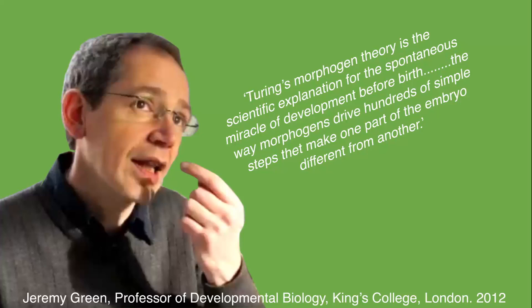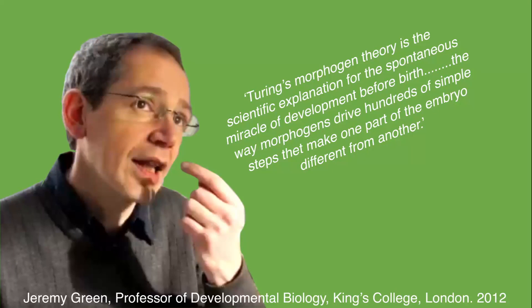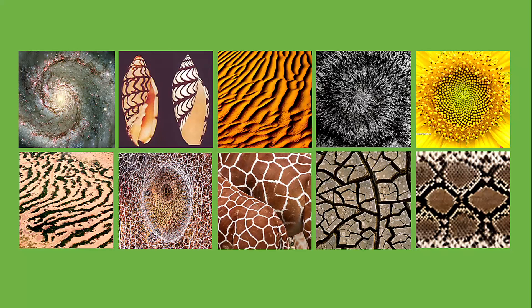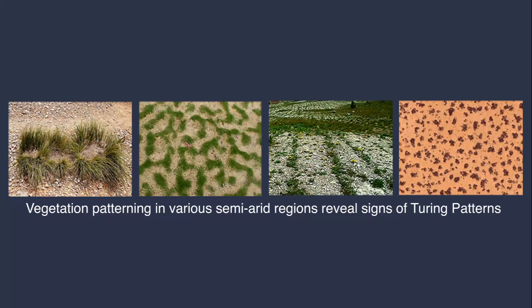It's only through hard-nosed scientific proof that scepticism towards Turing's theory can be dispelled, and such proof is now emerging. Ongoing research reveals that soon it will become possible to use morphogens to repair complex biological structures. Turing patterns are all around us, and their influence is legion. They can come to the rescue in semi-arid regions by prompting key interventions between vegetation and climate change.